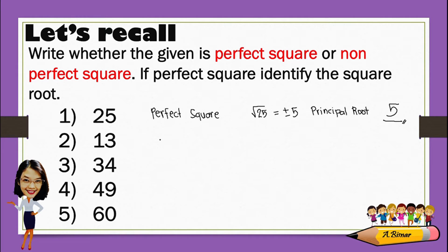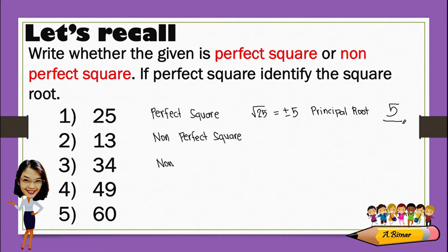Another: 13. 13 is a non-perfect square. This is because there are no factors that when multiplied by itself, the answer will be 13. Same with 34 — this is also a non-perfect square.